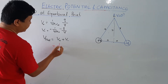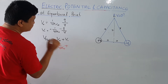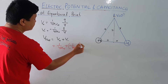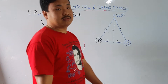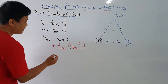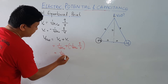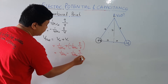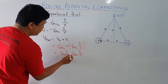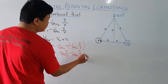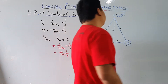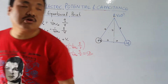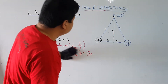V_net = (1/4πε₀)(q/r) + (−1/4πε₀)(q/r). The magnitude of the charge is the same in a dipole, only the sign differs. So the two terms cancel and V_net = 0. This means that at the equatorial point there is no electric potential.